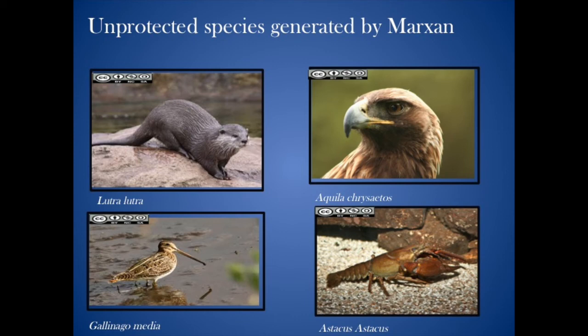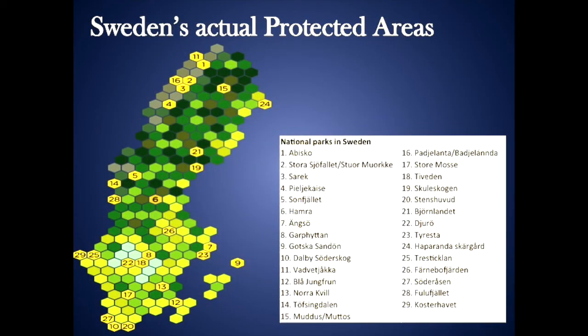Possible reasons why these species do not fall into protected regions could be because of urbanization. Railways, roads, agricultural lands and industrialization act as barriers and thus prevent the opportunity for these species to be conserved. On the other hand, they could already have been protected, as only the largest polygons of Sweden's protected areas were used in this particular project. It is important to mention that the conservation targets set aside for the species were not altered in any way, which proves that a large number of species in Sweden are already protected.